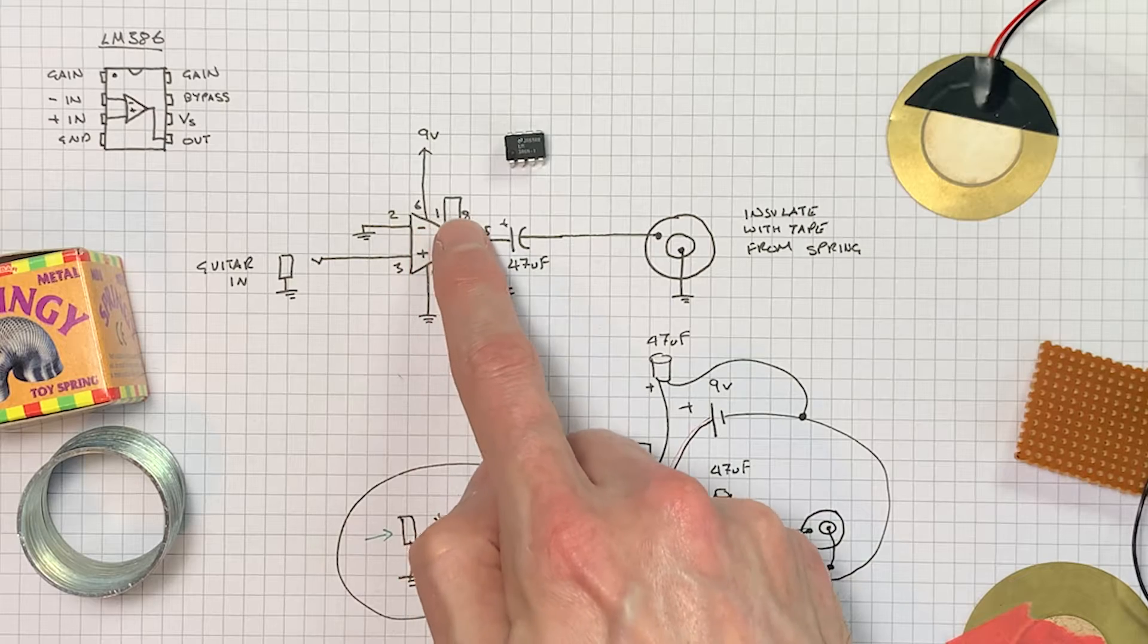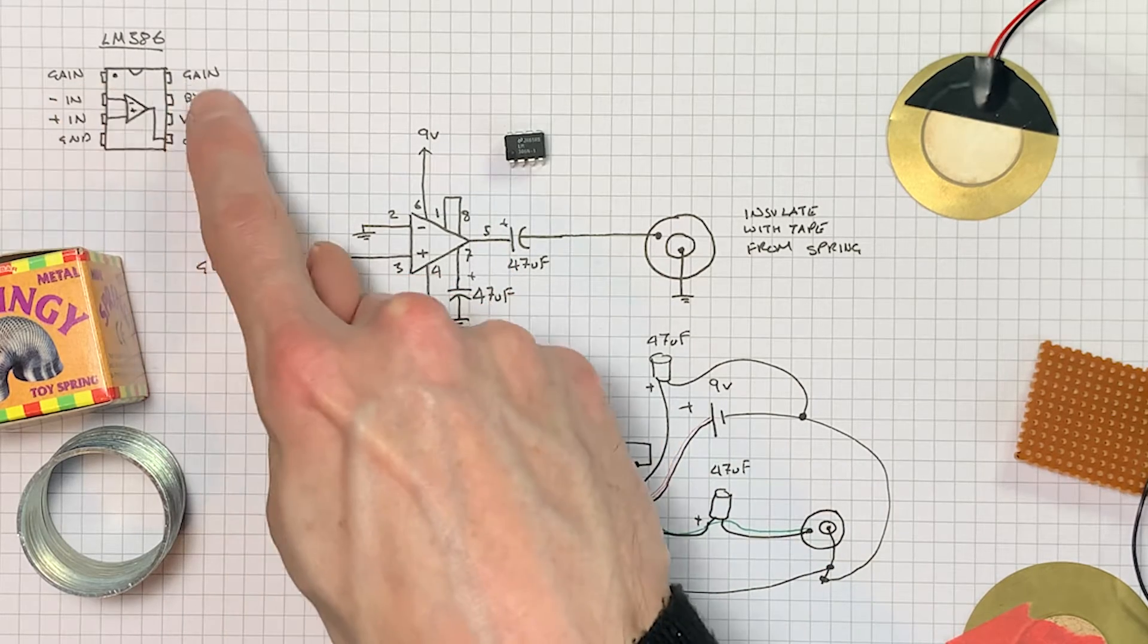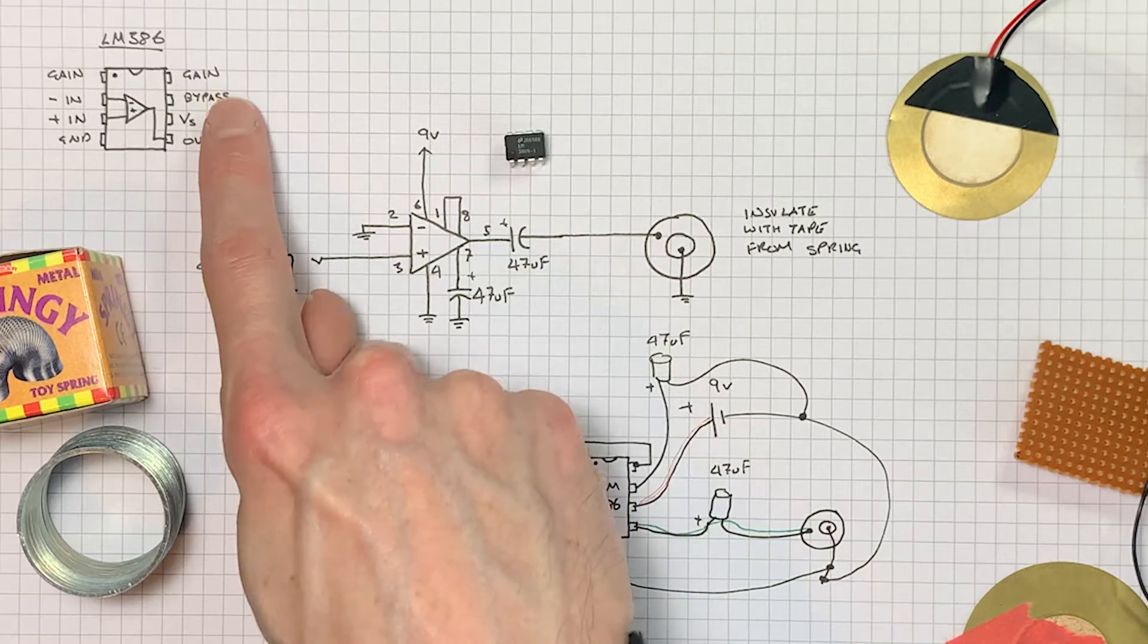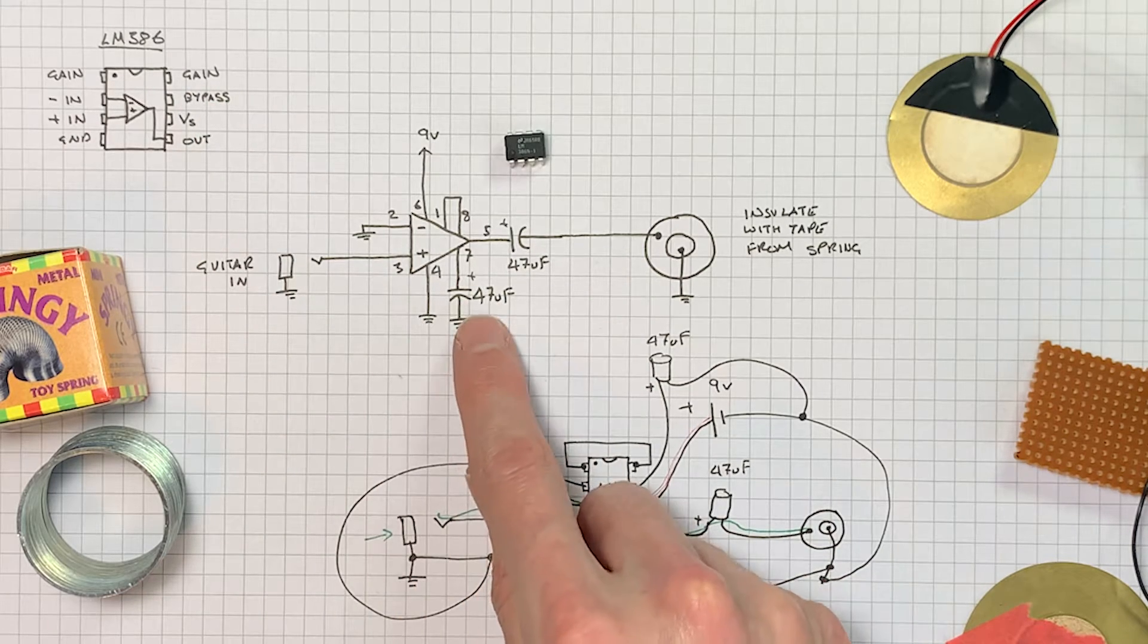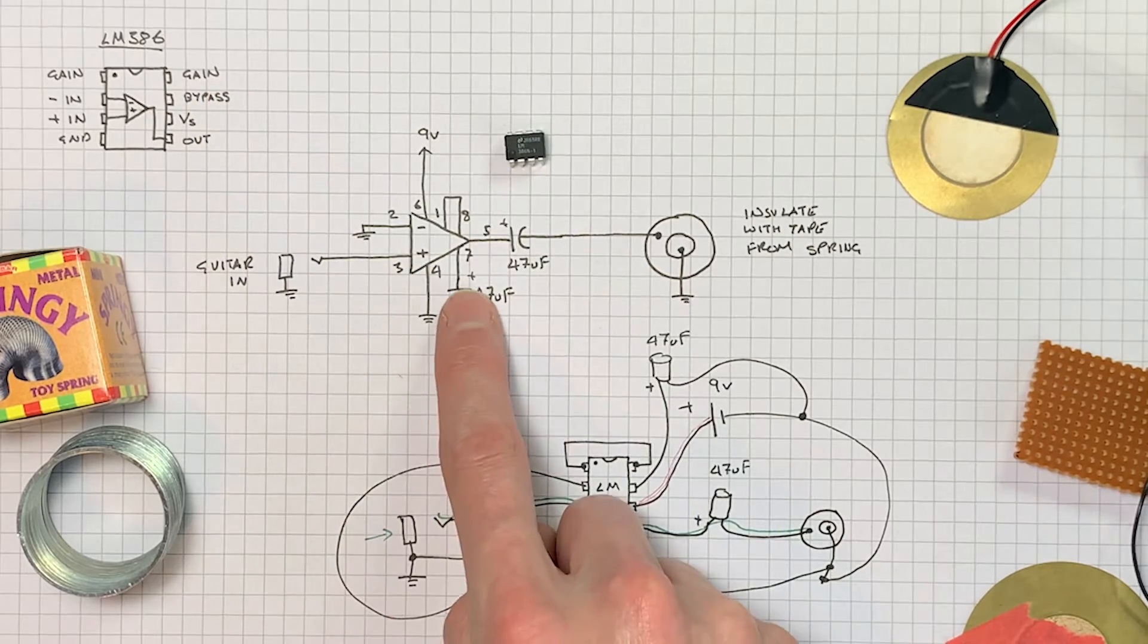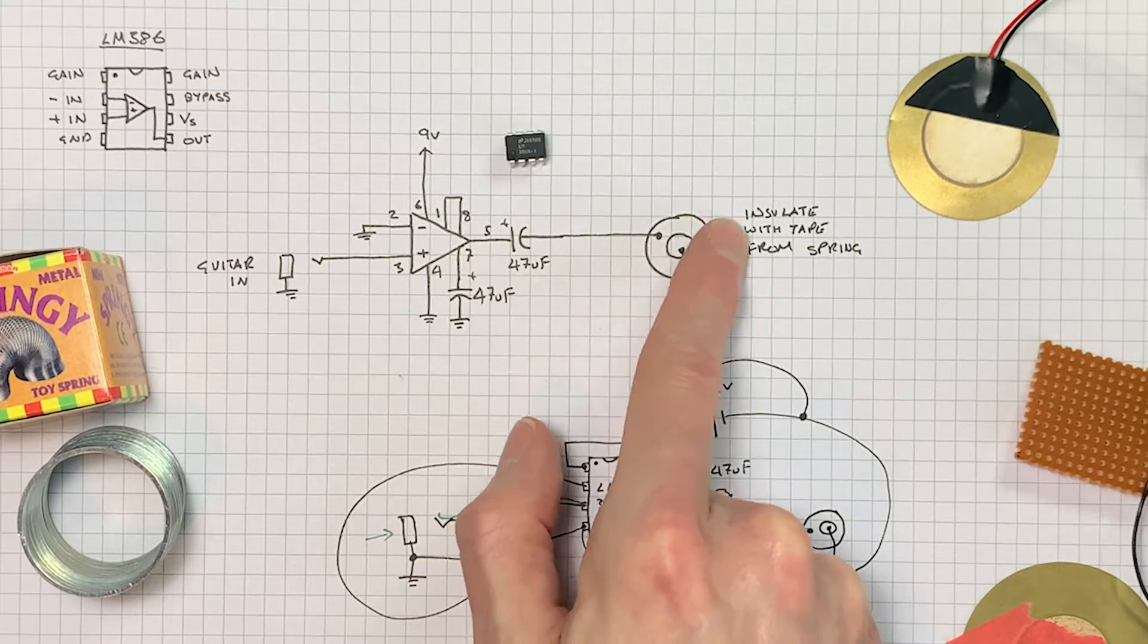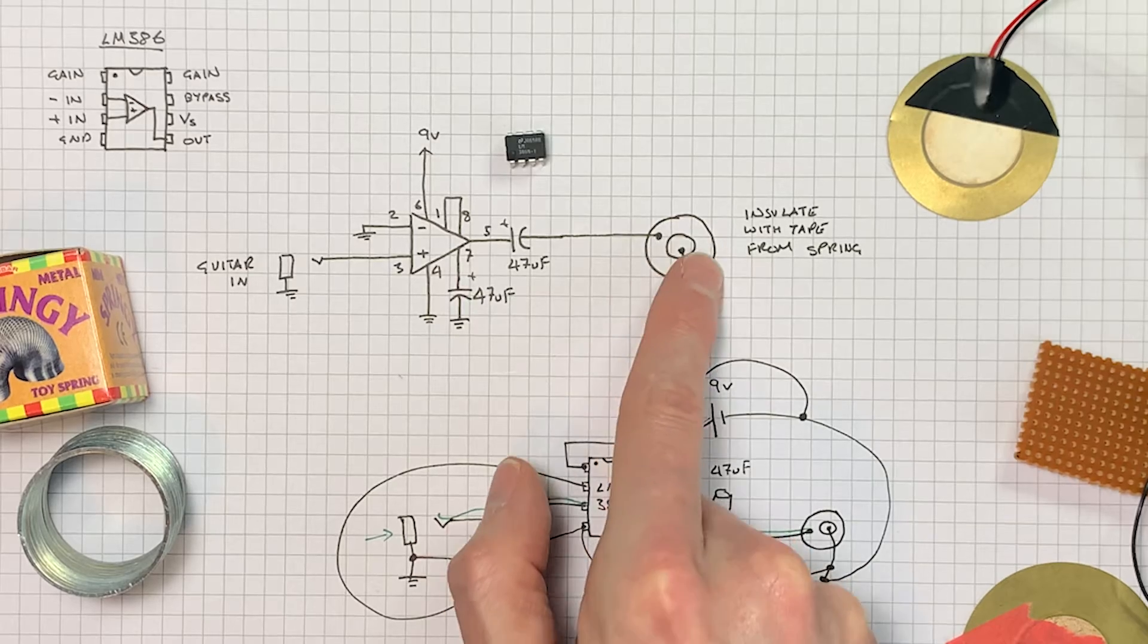And then pins one to eight are bridged together that gives us the maximum amount of gain, that's what these gain pins are for here. And then we've got our 47 microfarad capacitor going from pin seven which is the bypass pin to ground and then we've got this AC coupling capacitor on the output before a piezo which is driving the spring.